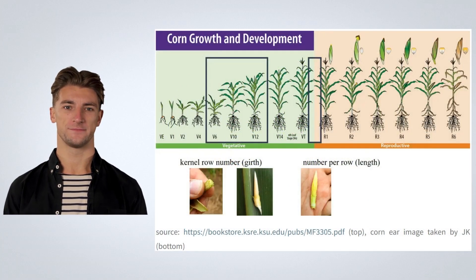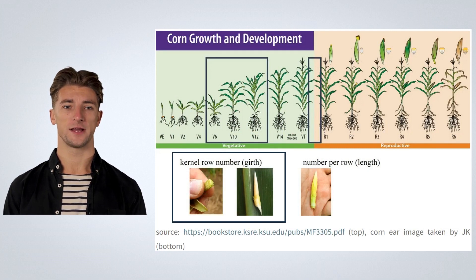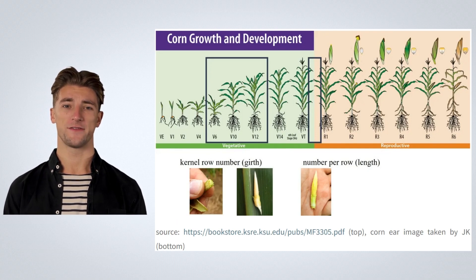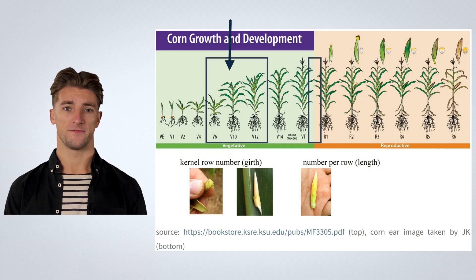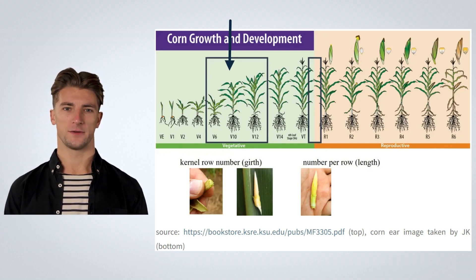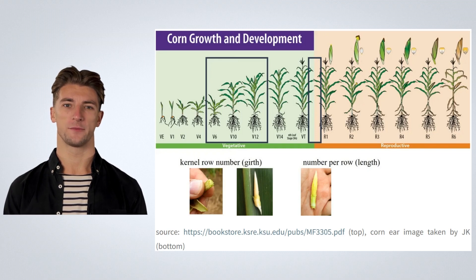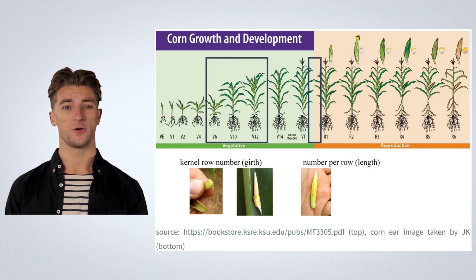In corn, kernel row number — also called girth — and number of kernels per row — also called length — are two main yield components. Girth determination of the uppermost cob begins shortly after the ear shoot is initiated between V5 to V6 and is thought to be complete by growth stage V12, while the potential number of kernels per row or length is finally determined around one week before silk emergence from the husk.